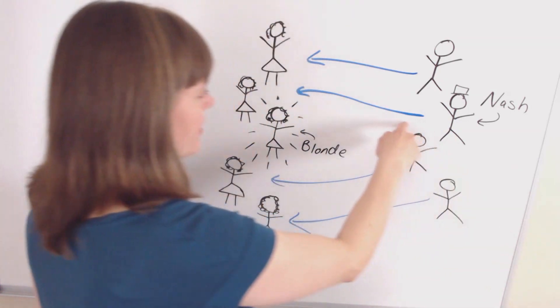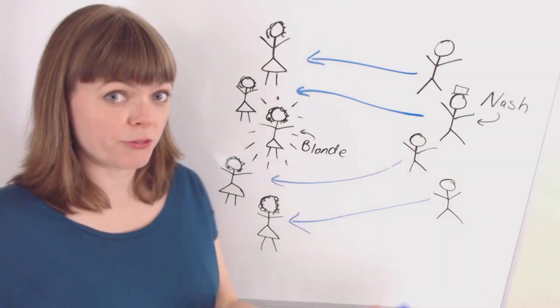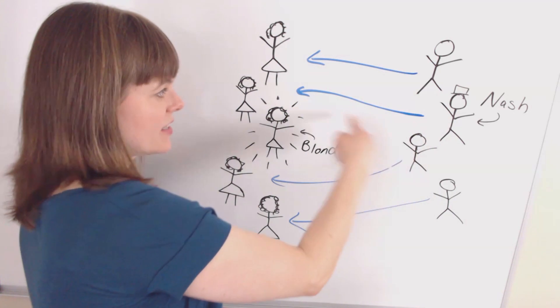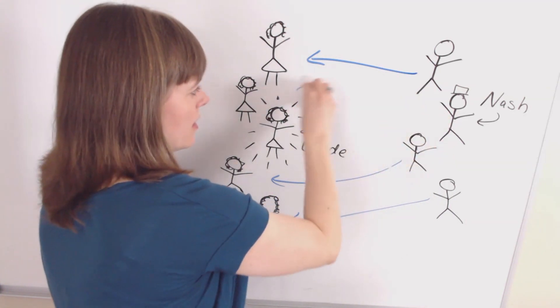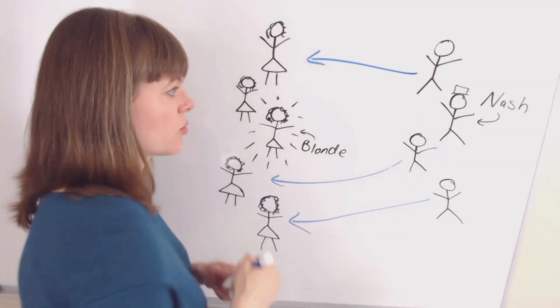That would be his best response. If he's going to go for the other brunette, as the movie proposes, then that's not a best response, so it's not a Nash equilibrium.